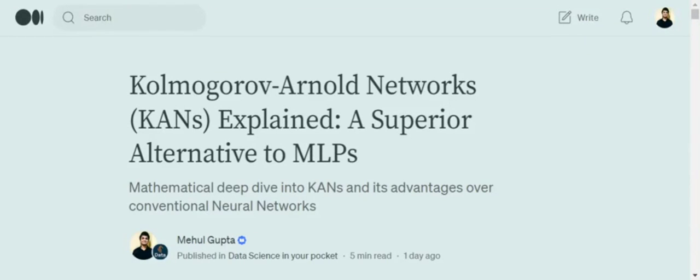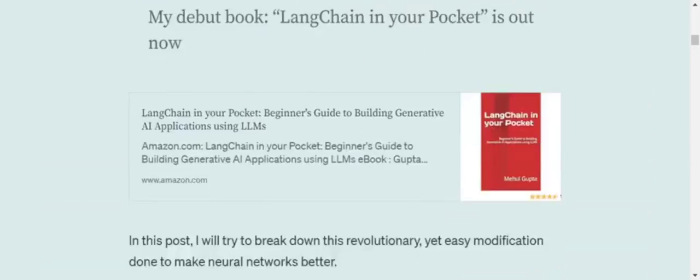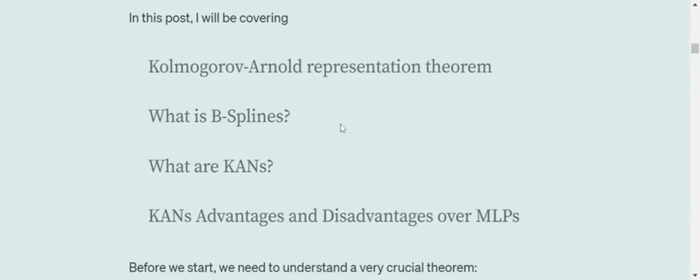Hi everyone. Today, taking a break from Generative AI, I will be discussing a major advancement in the field of neural networks, that is the incoming of Kolmogorov-Arnold networks, which are considered to be a superior alternative to multi-layer perceptrons, that is conventional neural networks, according to the paper they have claimed. In this post,